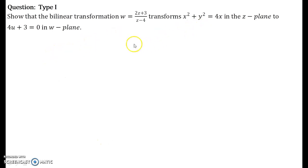Let us start solving this problem. I hope everyone is aware that x² + y² = 4x is a circle in z-plane. We will be explicitly writing this equation in terms of z now because it is given in terms of x and y.